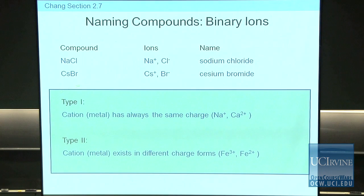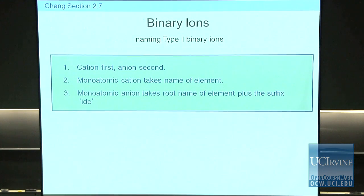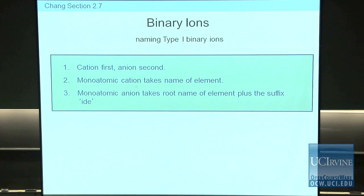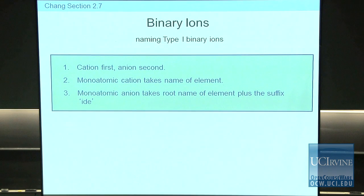Let's first start with binary ionic compounds that contain a Type 1 metal. Here is the set of rules — everybody can follow them. You name the cation first and the anion second. Sodium chloride: sodium is the first element — you say sodium first. Then chloride, which is the chlorine anion, is second. The monoatomic cation takes the name of the element. The monoatomic anion takes the root name of the element plus the suffix '-ide'. The element is chlorine, but in the compound you call it chloride.